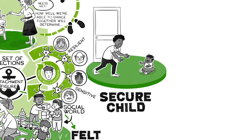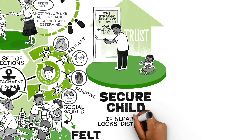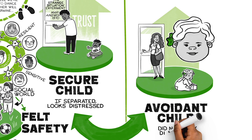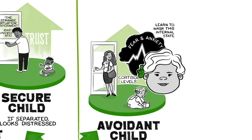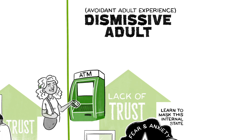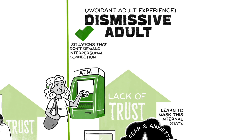Here's the key thing. If they're separated, secure babies look distressed. But the avoidant babies did not look distressed. So they learn to mask this internal state of fear and anxiety. And that's the origins of the avoidant adult's experience. A person may do fine in situations that don't demand interpersonal connection, but when they demand that interpersonal connection, they begin to flounder.